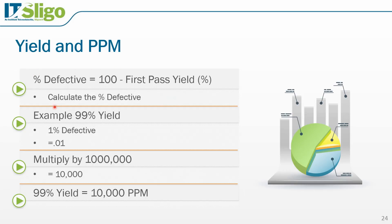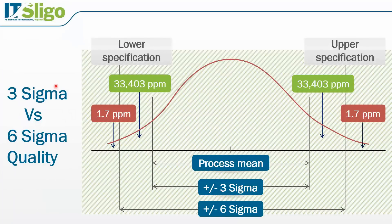We're moving from yield in percentage terms into PPM — parts per million. Percent defective is 100 minus the first pass yield. If we have a 99% yield, we have 1% defective. One percent is 1 out of 100, which in decimal terms is 0.01, and if we convert that to PPM — 1 out of 100 is bad, but in terms of a million it's 10,000 out of a million. So a 99% yield is 10,000 PPM, and a 99.5% yield is 5,000 PPM, meaning for every million parts built, 10,000 are bad.